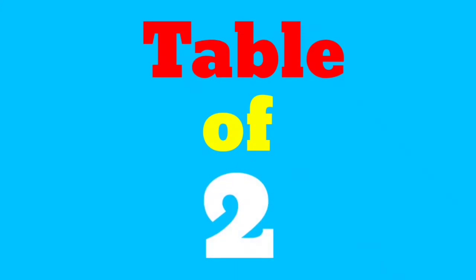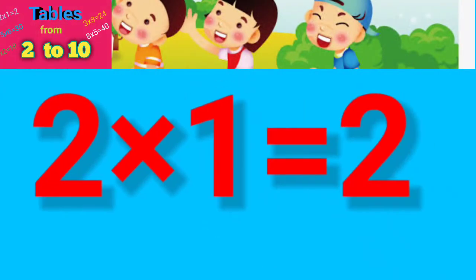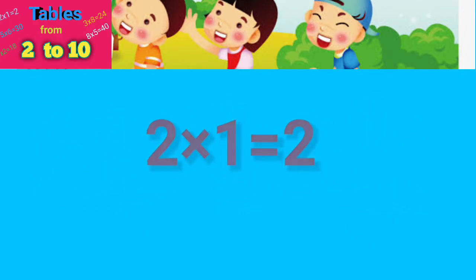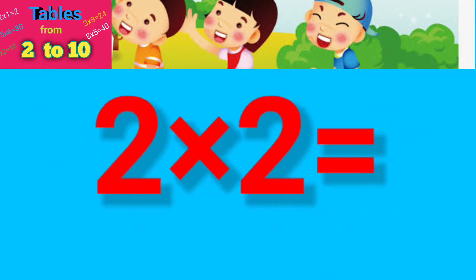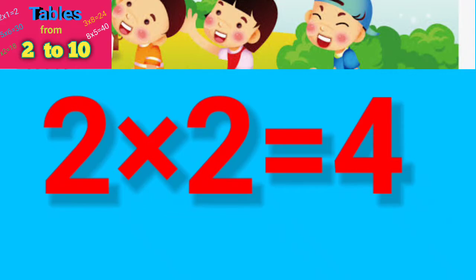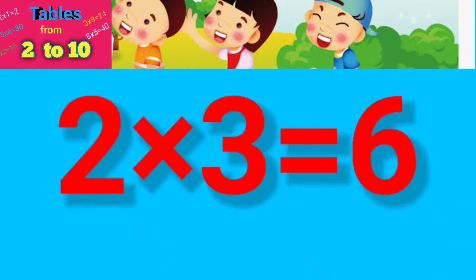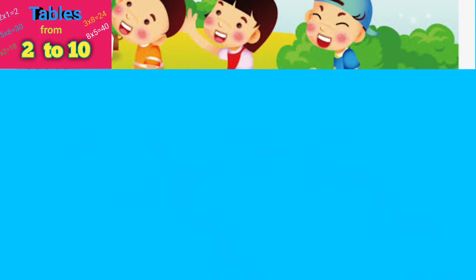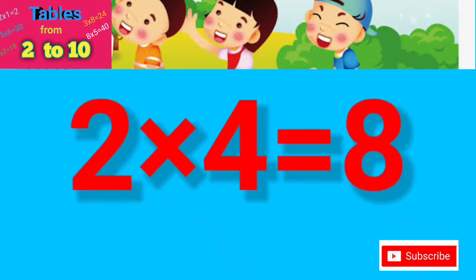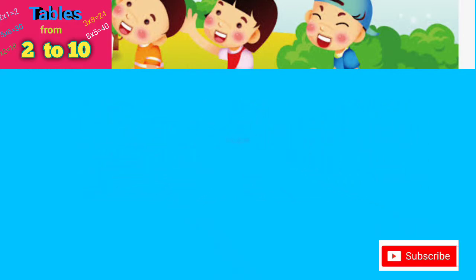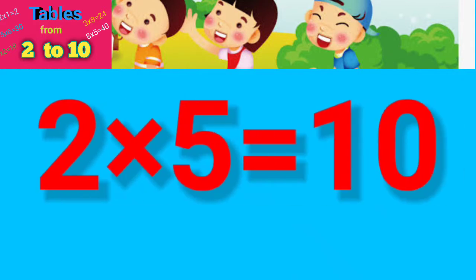Table of 2: 2×1=2, 2×2=4, 2×3=6, 2×4=8, 2×5=10.